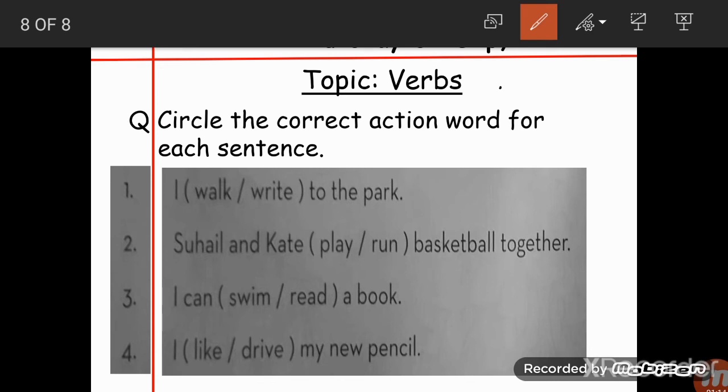After writing this you are going to write the question. And the question is: circle the correct action word for each sentence. You have to circle the correct action word for each sentence. As you can see, you have two action words in each sentence, you have to choose the correct one. One is wrong and one is correct, so you have to circle the correct one.